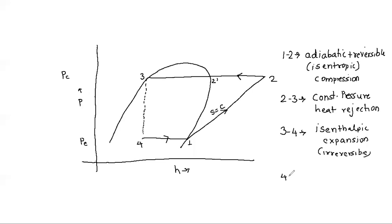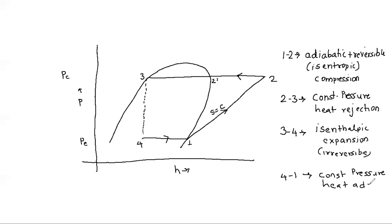Finally, process 4 to 1 occurs at constant pressure in the evaporator. The enthalpy increases because heat is being added to the refrigerant — the working fluid. This is a constant pressure heat addition process.